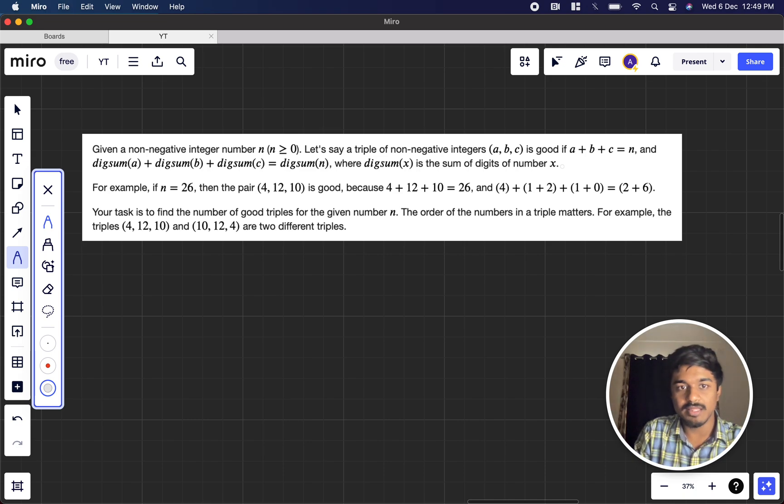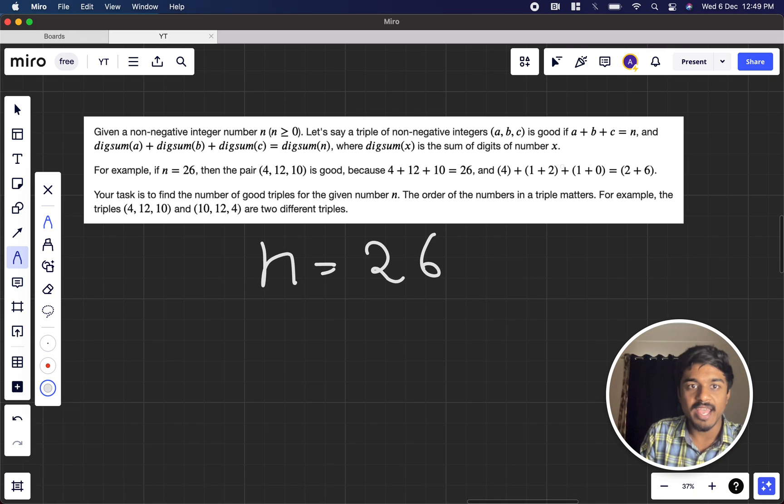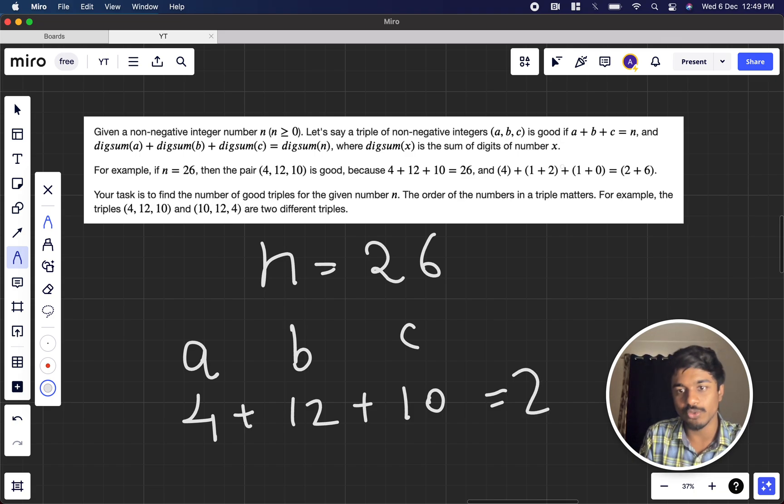They give you an example. Suppose in the input n equals 26, and a is given as 4, b is given as 12, and c is given as 10. The sum of these three numbers is 26.